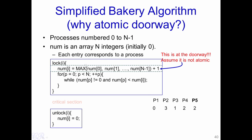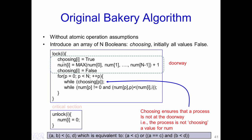Next we look at the relaxation of this assumption by examining the original Bakery algorithm, which does not require the max statement to be atomic. In addition to the shared array num, we also have a shared Boolean array called choosing of size n. The choosing flag is set to true before the process invokes max, and after max is computed and 1 is added, the process sets its choosing value back to false.